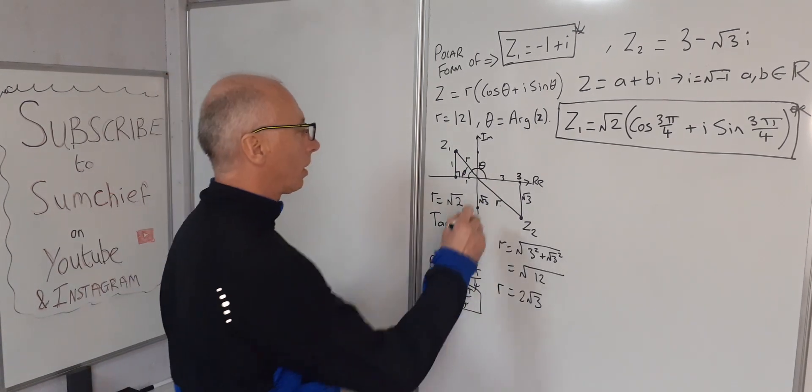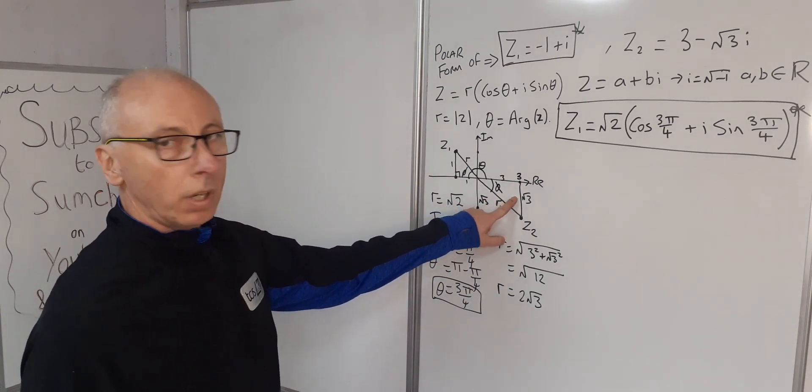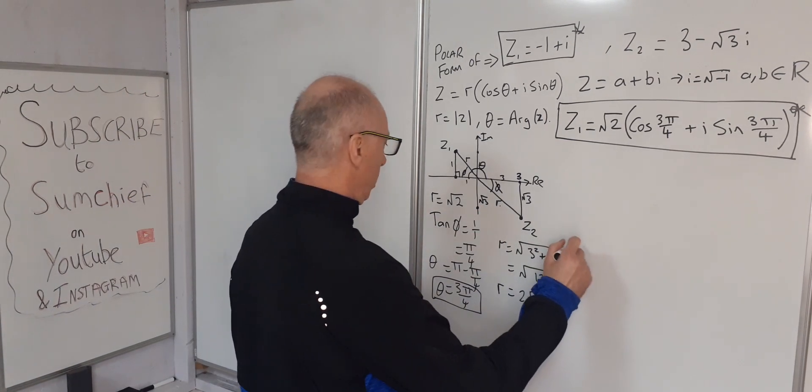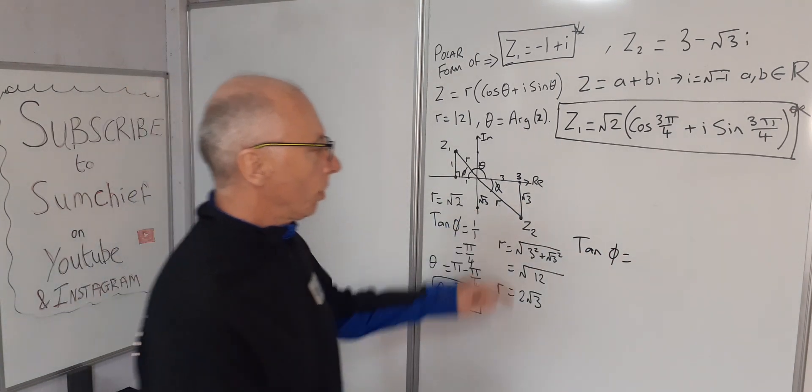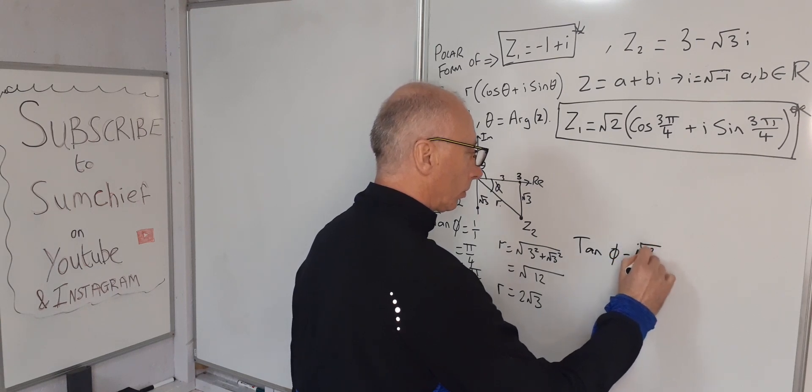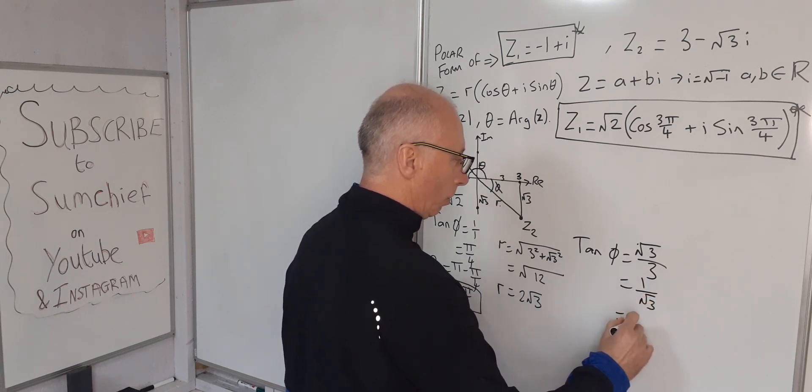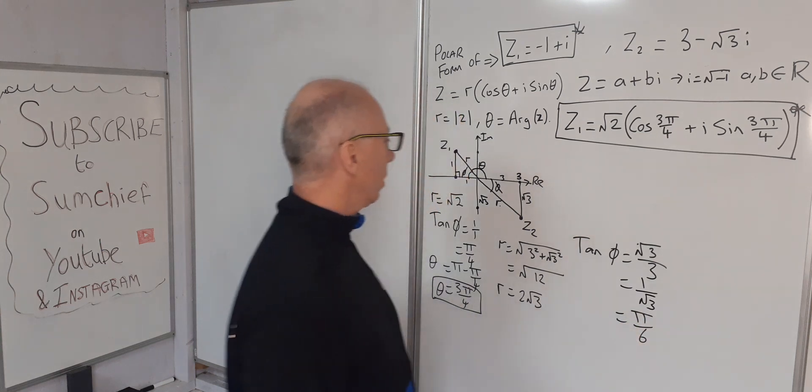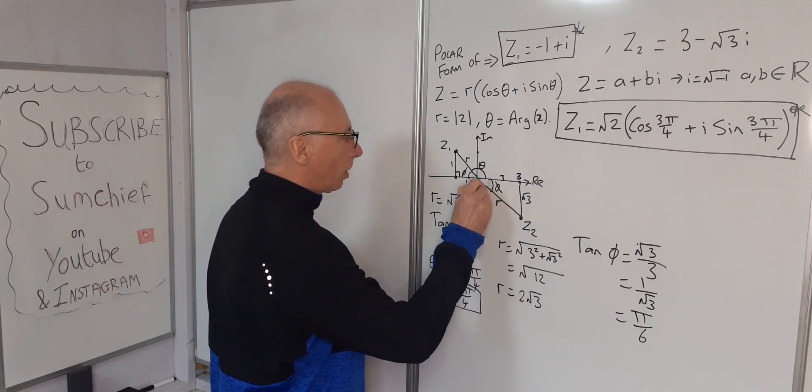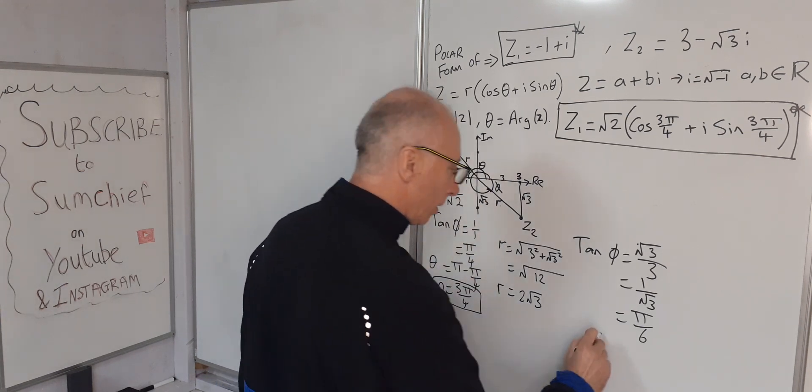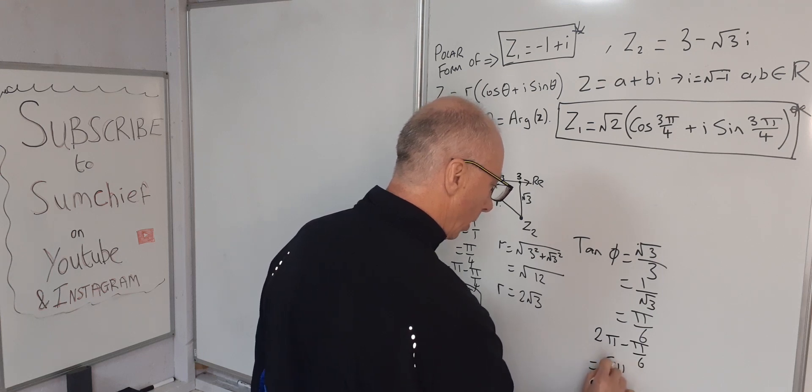Now we need our angle here. Let's call that φ again, using SOHCAHTOA. tan φ = √3/3 = 1/√3, which equals π/6. That angle there is π/6, but what we're interested in is the angle all the way around to here. So what we want is 2π - π/6, which equals 5π/6.